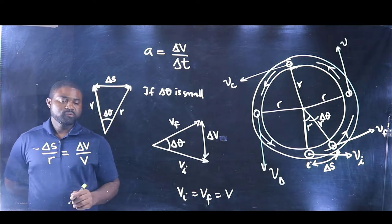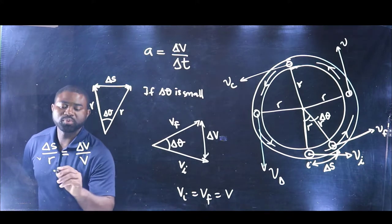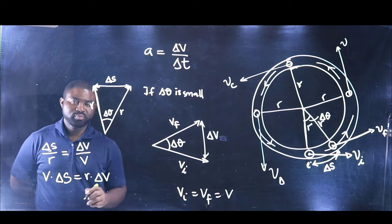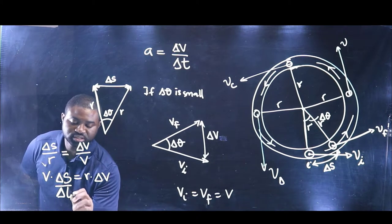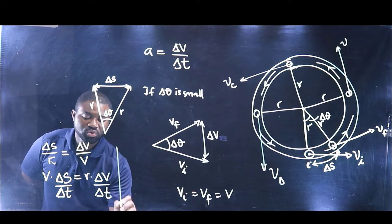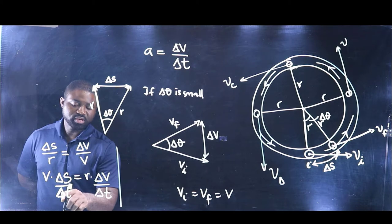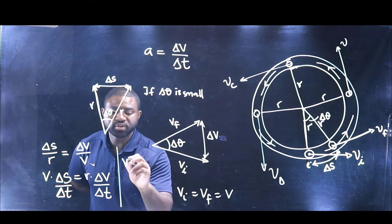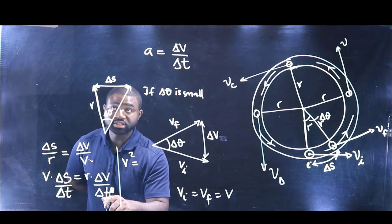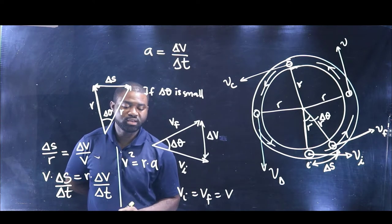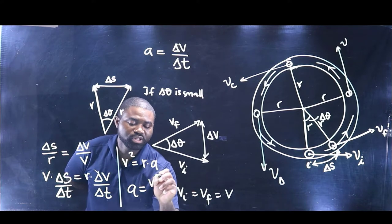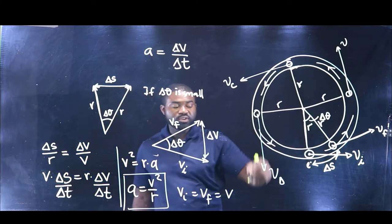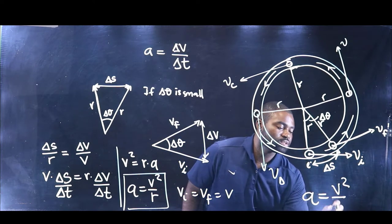So if we cross multiply both sides, we have V multiplied by delta S equal to R multiplied by delta V. If we divide both sides by delta T, then delta S over delta T is V — because this is change in distance over change in time — and delta V over delta T is A. So we get V squared equals R times A, which means that A equals V squared divided by R. The acceleration of a particle moving around a circular track is given by A equals V squared over R.